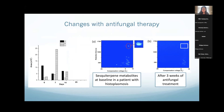Here is some GC-DMS data looking at changes with antifungal therapy. In the first panel you can see a blob of three metabolites all coming out together before the patient received any therapy. After three weeks of antifungal therapy the blob has really diminished in size, and looking at the quantitative peaks, it has clearly diminished over time with antifungal therapy, reflecting the response of the mold.